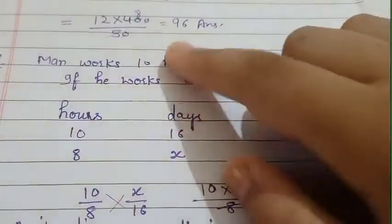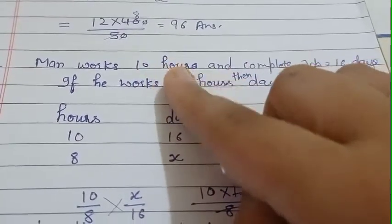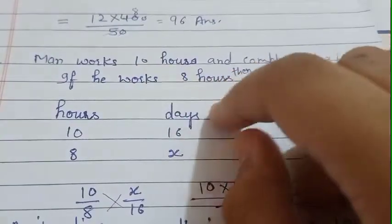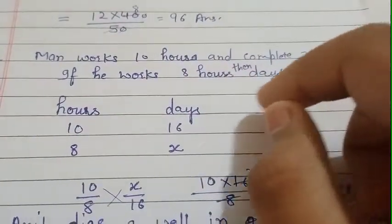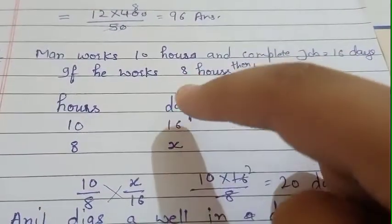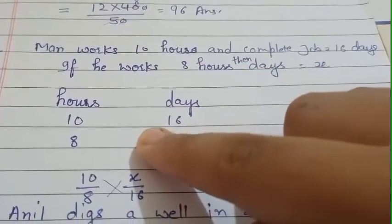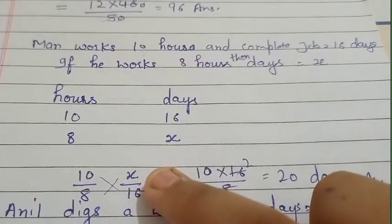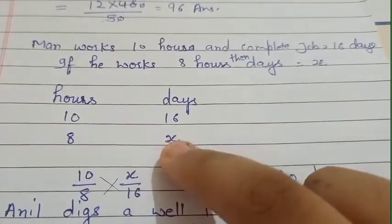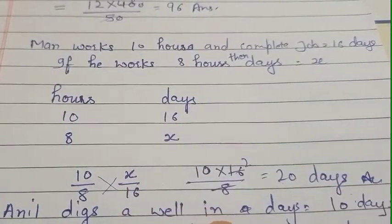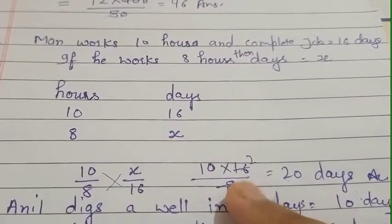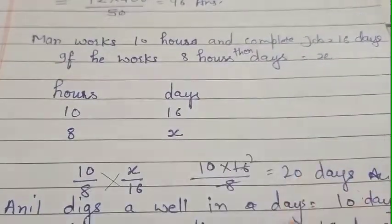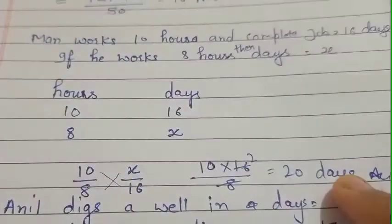9th question: a man who works for 10 hours completes the job in 16 days. If he works for 8 hours, how many days will it take? The days will be more. So 10 upon 8 cross multiply 16 upon x. x equals 10 multiplied by 16 upon 8, which gives 20. So the answer is 20 days.